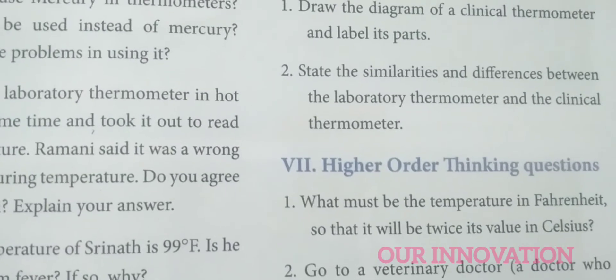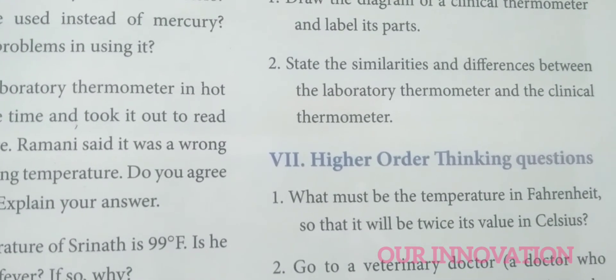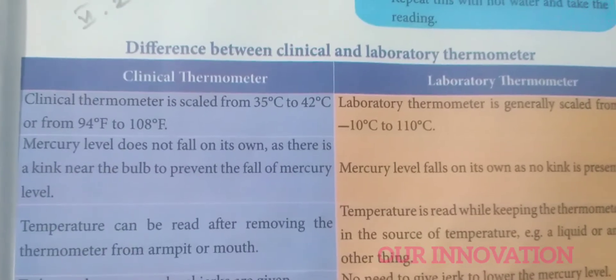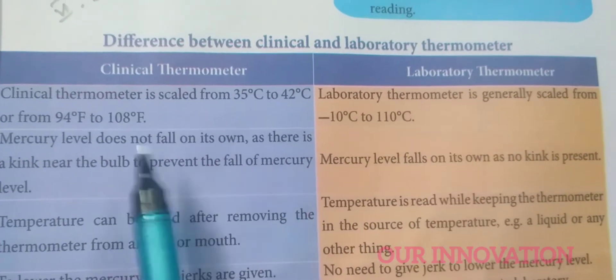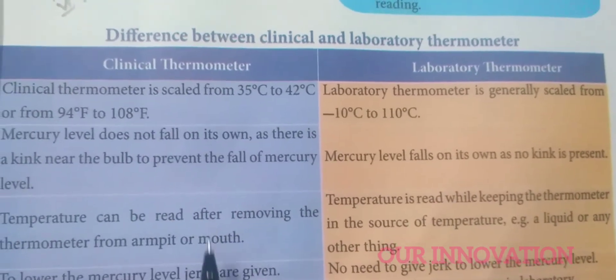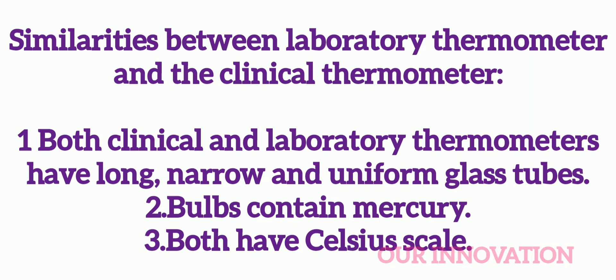State the similarities and differences between the laboratory thermometer and the clinical thermometer. For similarities: both clinical and laboratory thermometers have a long, narrow, uniform glass tube; both bulbs contain mercury; and both have a Celsius scale. Mark the full comparison box in your book.